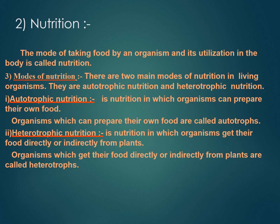Now let us start with autotrophic nutrition. Autotrophic is the combination of two words: auto plus trophic. Auto means self and trophic means nutrition — that means self nutrition. All green plants and green algae are autotrophic, meaning they prepare their own food. The organisms which show autotrophic nutrition are called autotrophs. So plants are called autotrophs.